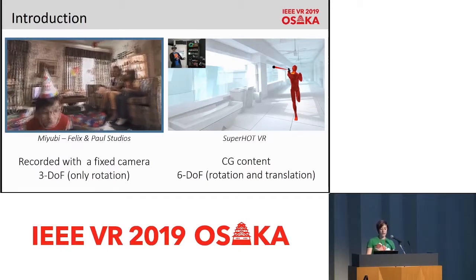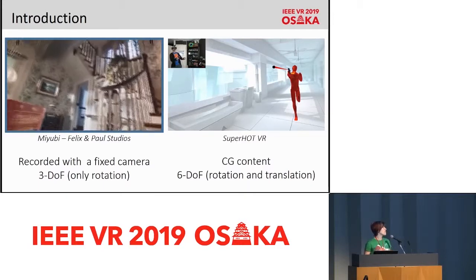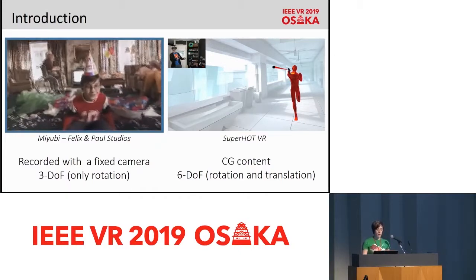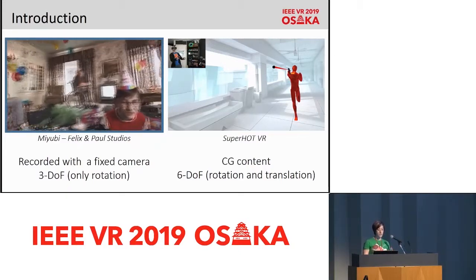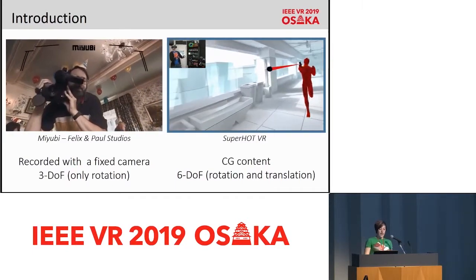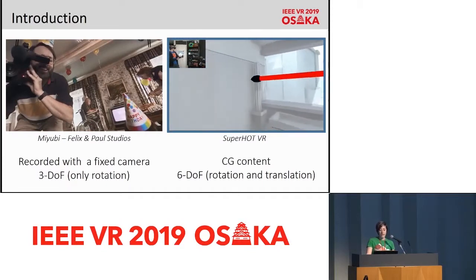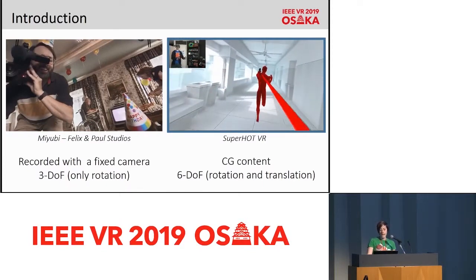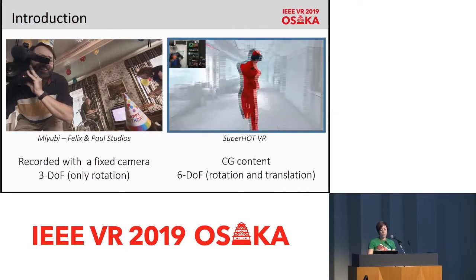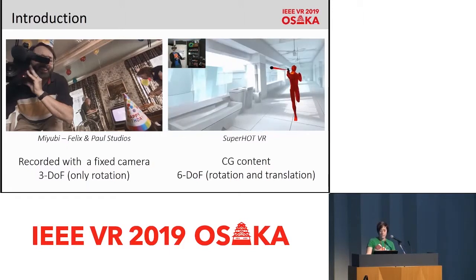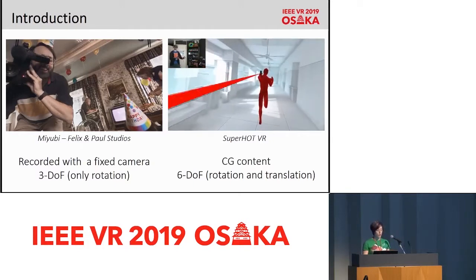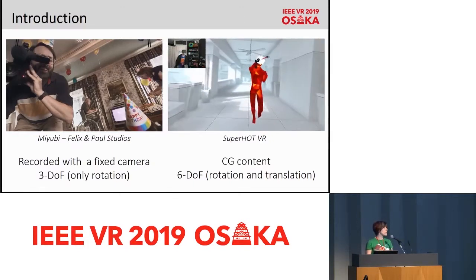This one playing now on the left is a source cinematic video called Mijubi from Felix and Paul Studios. This is a 360 video recorded with a fixed-set camera, and what you're seeing here is the experience of a given user watching the video and looking around. The one playing on the right is a gameplay of a popular VR game called Superhot VR, and this VR experience has a key element that the previous video did not have: it supports head motion parallax. You can notice that the point of view of the game changes as the user moves around, while in the previous video the user could only watch the scene from a given viewpoint where only rotation was possible.